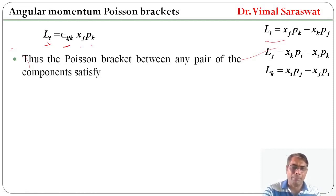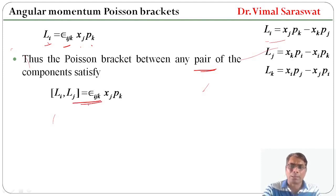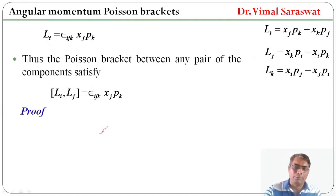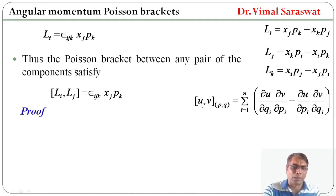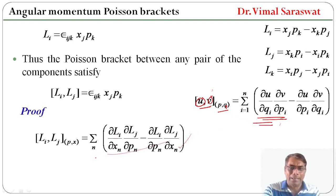Thus the Poisson brackets between any pair of angular momentum components satisfy the relation: the Poisson bracket of Li and Lj equals εijk · xj · pk. Now we prove this. The Poisson bracket of u and v with respect to generalized coordinates is given by the standard formula. We have already discussed this formula and the link of that lecture is in the description box. Now if u is Li, v is Lj, and q represents the generalized coordinates, then the bracket becomes the sum over n of (∂Li/∂xn · ∂Lj/∂pn minus ∂Li/∂pn · ∂Lj/∂xn).